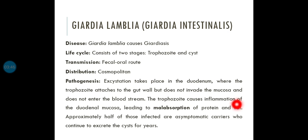Approximately half of those infected are asymptomatic carriers who continue to excrete cysts for years. Asymptomatic cases may result from a low number of parasites, low virulence strains of Giardia lamblia, or a strong immune system of the host.